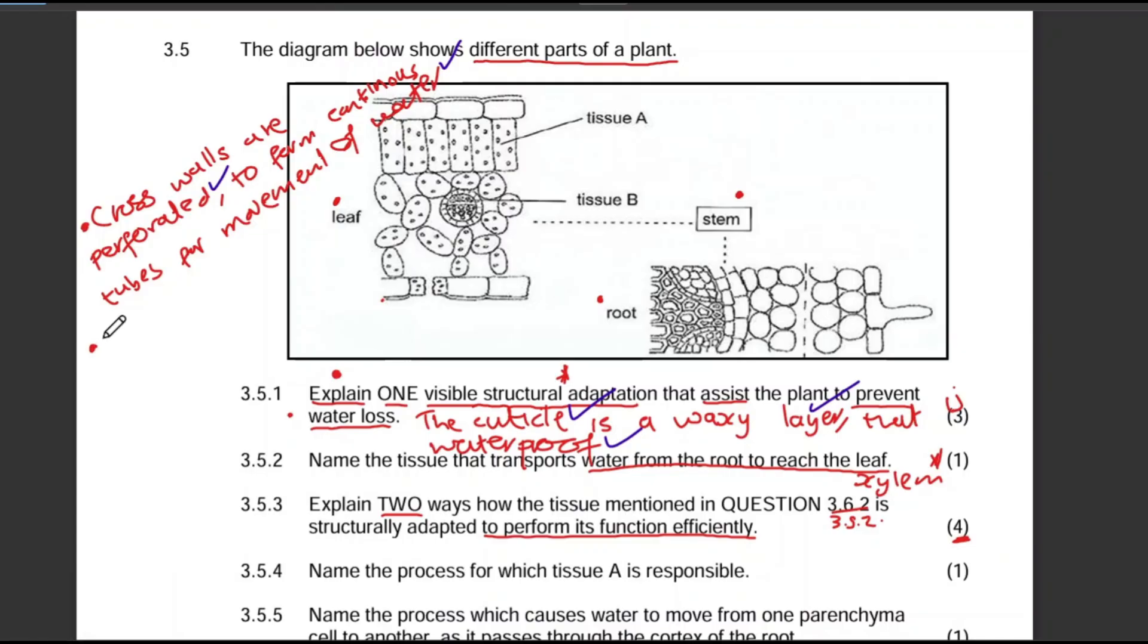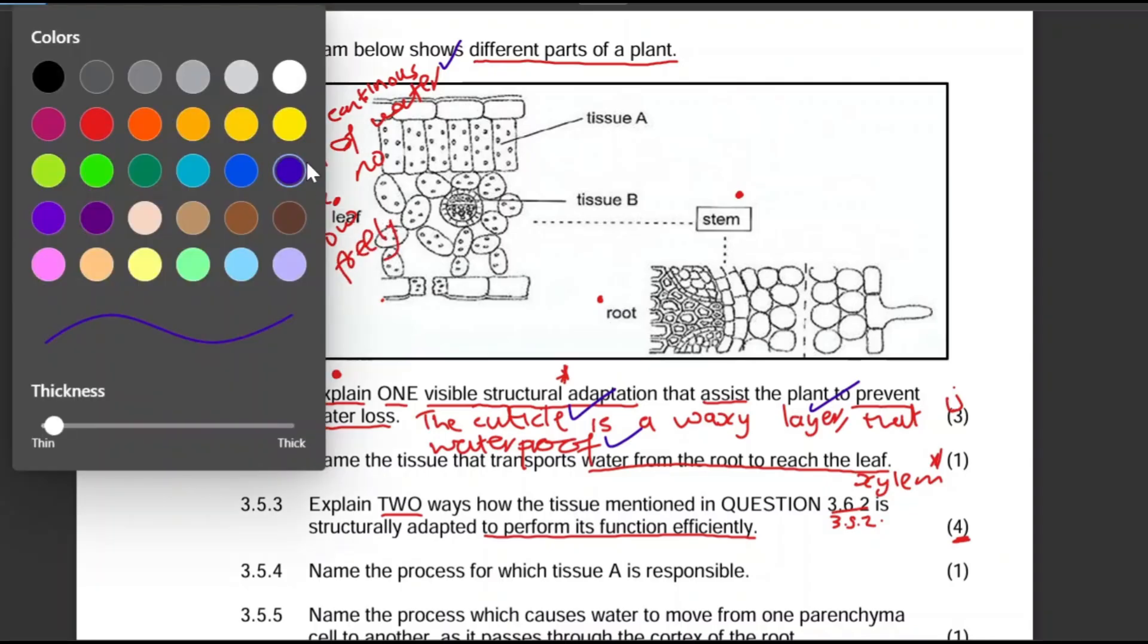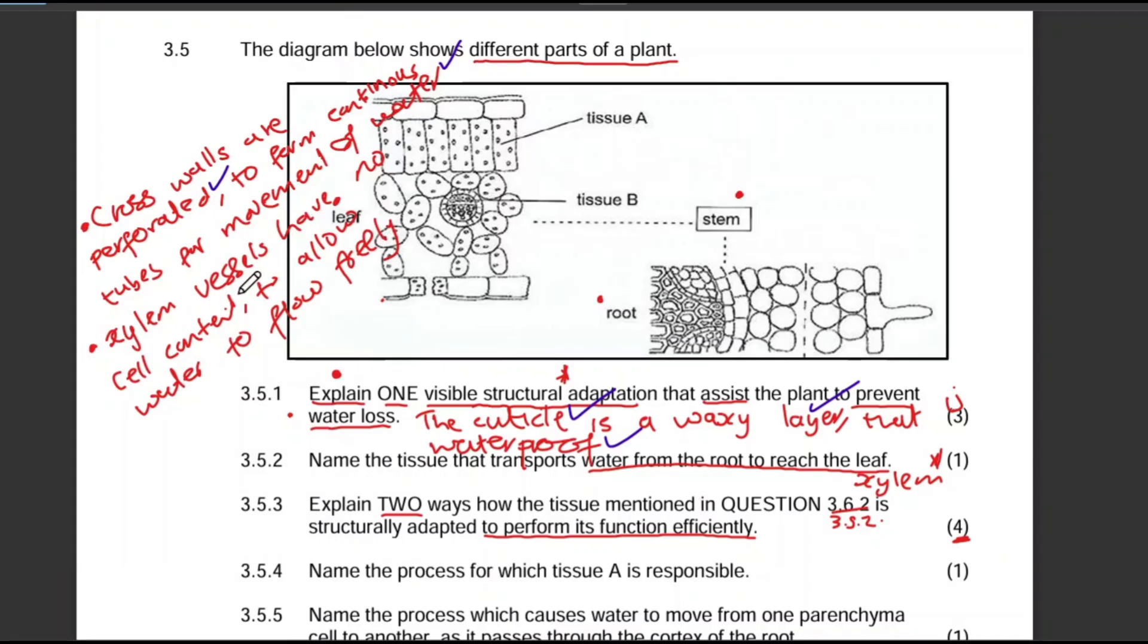The second one you can speak about: the xylem vessels have no cell content and this is to allow water to flow freely. Xylem vessels have no cell content - why? For water to flow freely. There's your two marks.